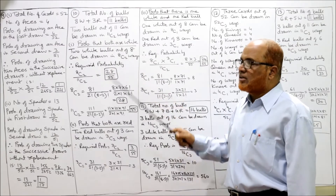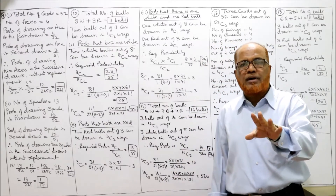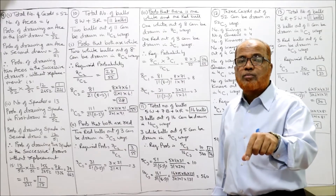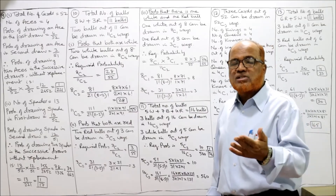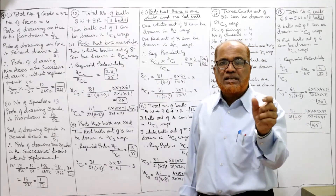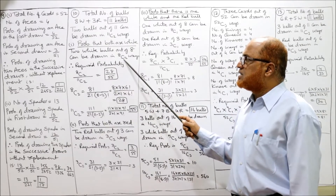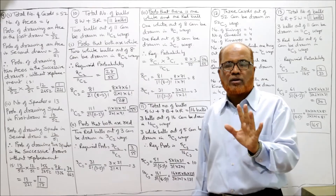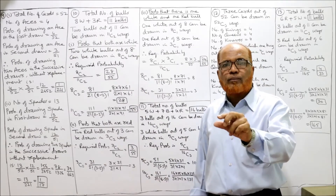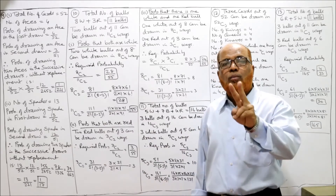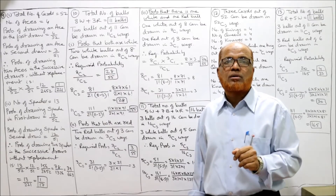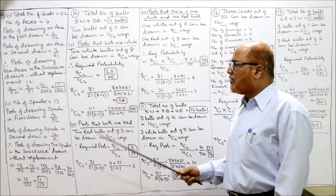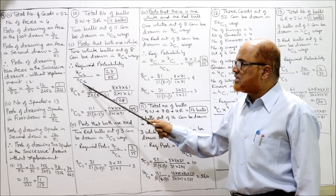First question — probability that both balls are white. There are 8 white balls. We want to draw 2 white balls out of 8, which can be done in 8C2 ways. This is our favourable case. Total number of outcomes: 2 balls drawn out of 11 balls = 11C2. Probability = number of favourable cases divided by total number of outcomes = 8C2 / 11C2.